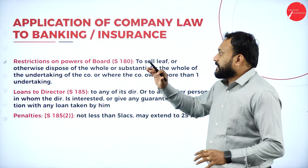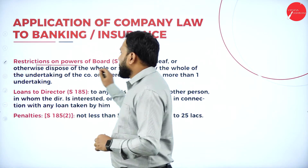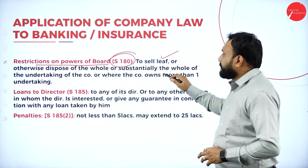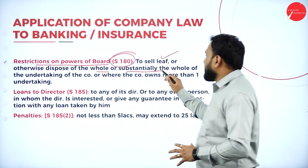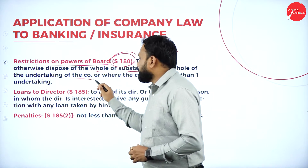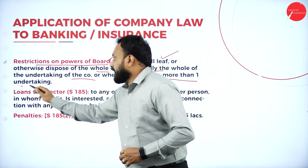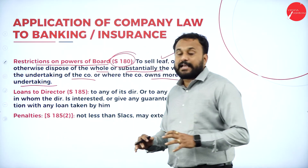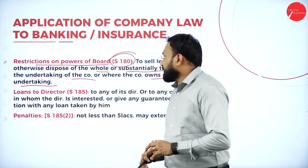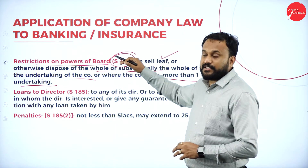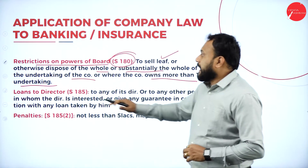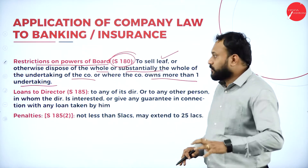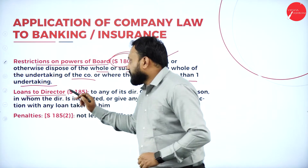Now we know what the board of directors can do, but what are the restrictions? Under Section 180, restrictions on the power of the board state that the board cannot sell, lease, or otherwise dispose of the whole or substantially the whole of the undertaking of the company, or where the company owns more than one undertaking, without proper authorization.